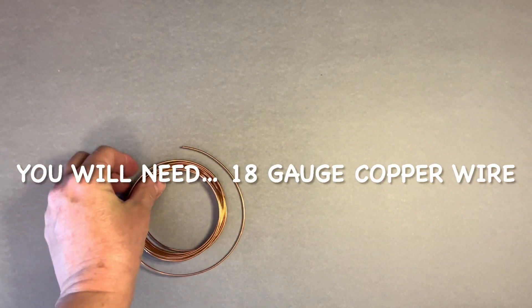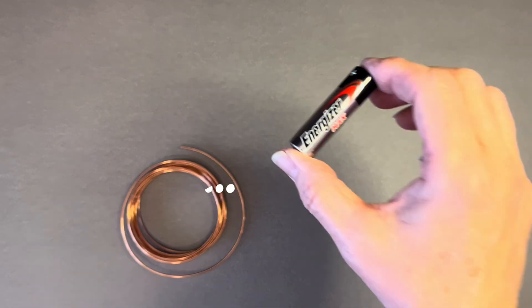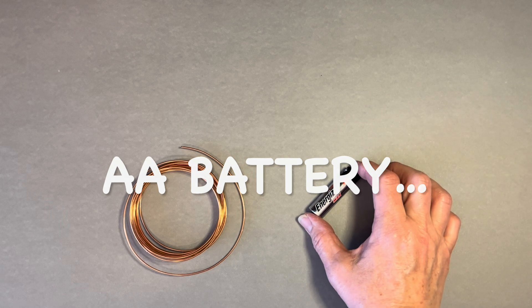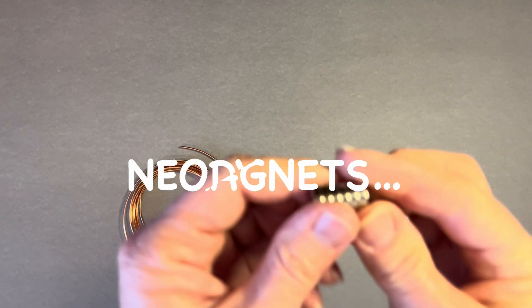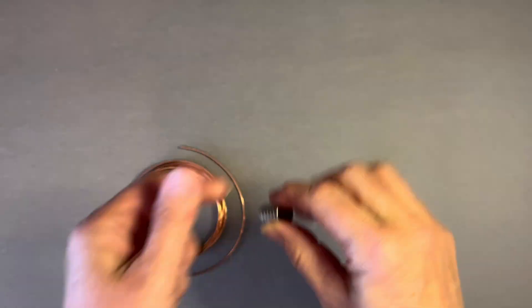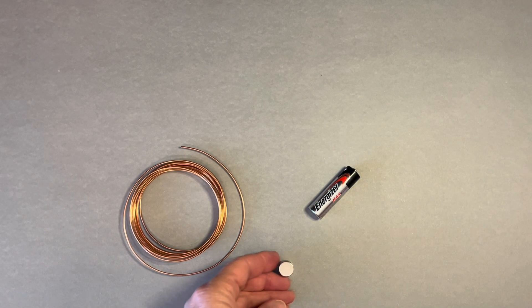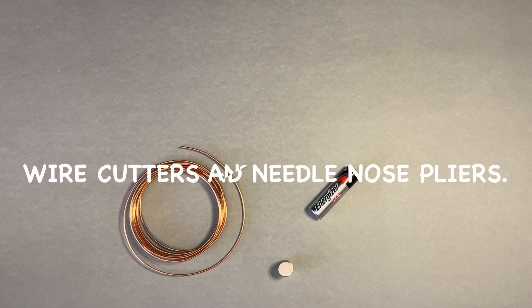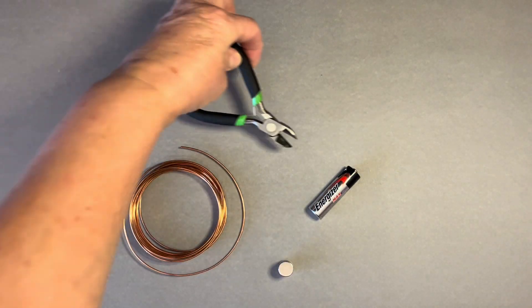To get started you need 18 gauge copper wire, a AA battery, some neodymium magnets that you can get at the local hardware store. They're very strong so be careful. You'll also need wire cutters and you may find needle nose pliers helpful.